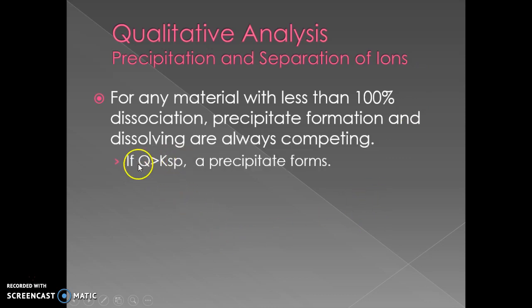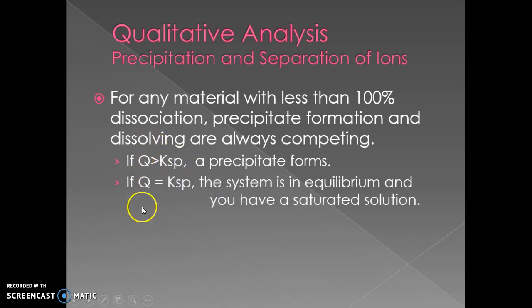If Q is greater than Ksp, if you have more ions than Ksp requires, you will get a precipitate. If Q equals Ksp, that means you have a saturated system in equilibrium. And if Q is less than Ksp, obviously everything's going to stay dissolved.